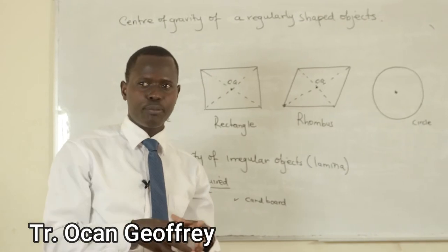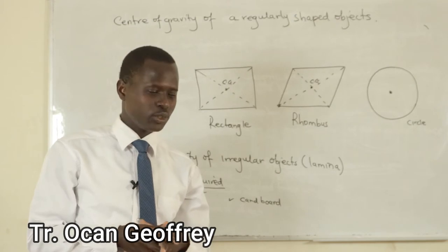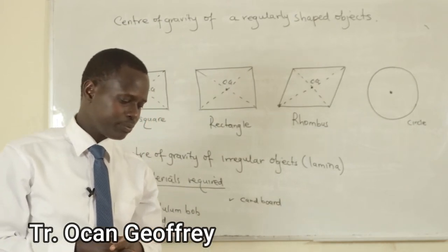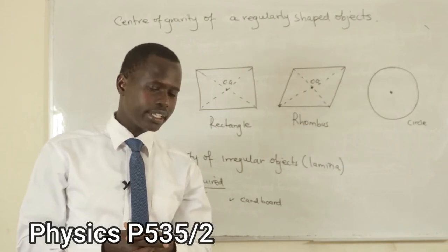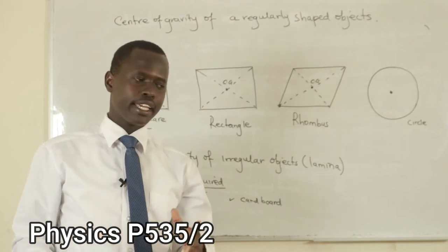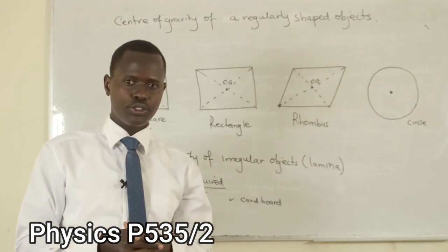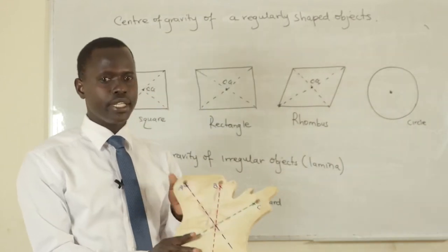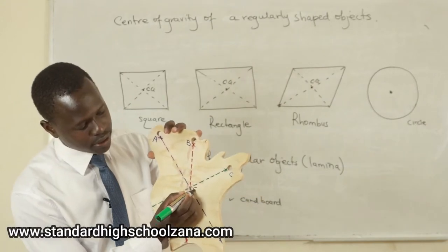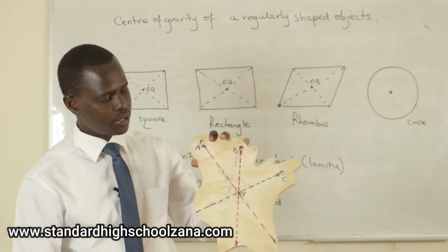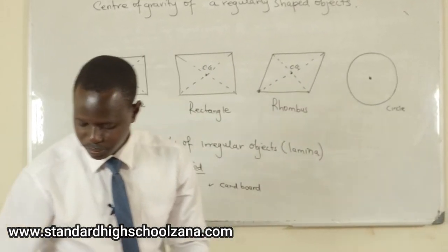Don't give a very big displacement because the force we applied shouldn't be too large — give just a slight displacement. Then you mark two points on the laminar and join them using a straight line. Then again you move to hole B, then hole C, and do the same. Where the three lines meet, that will be the center of gravity of this object — that's how you find the center of gravity of the laminar.